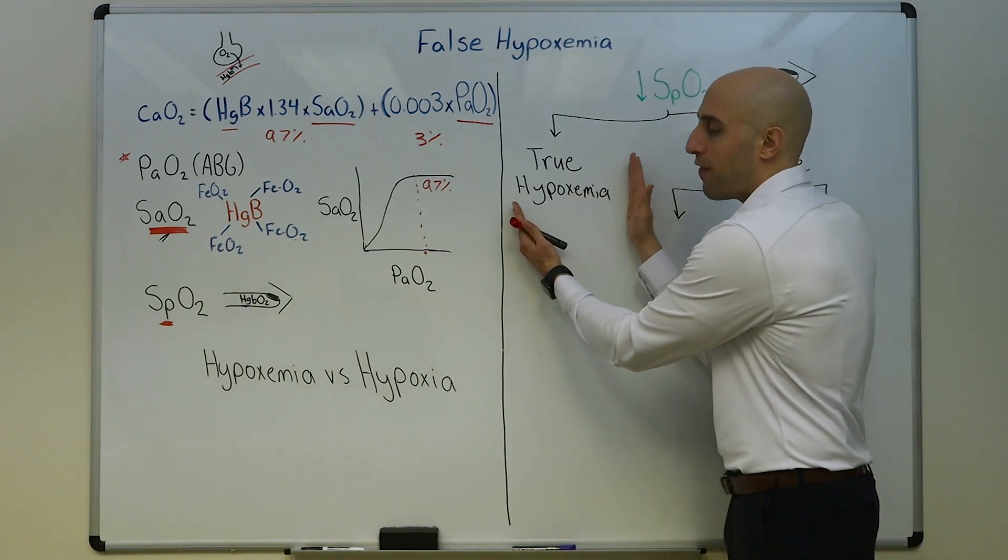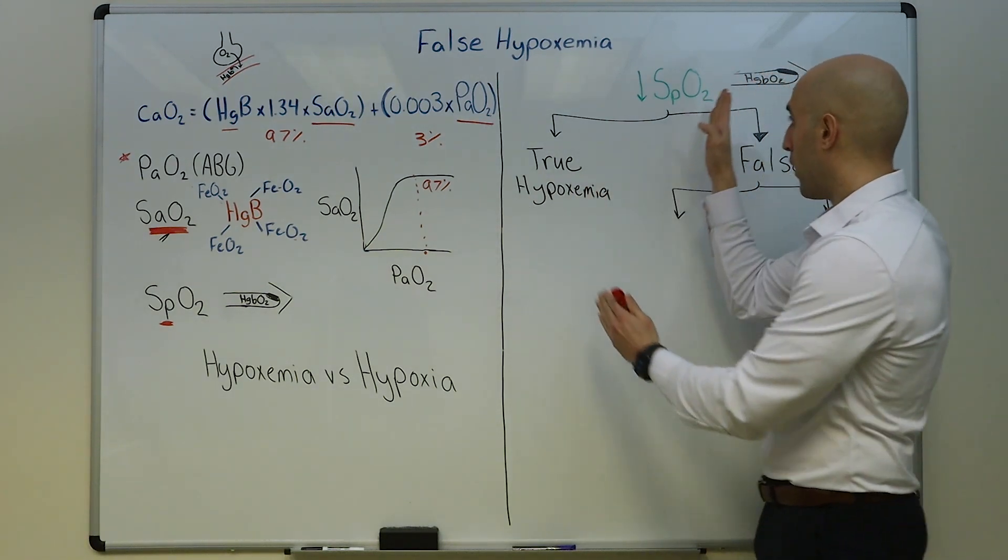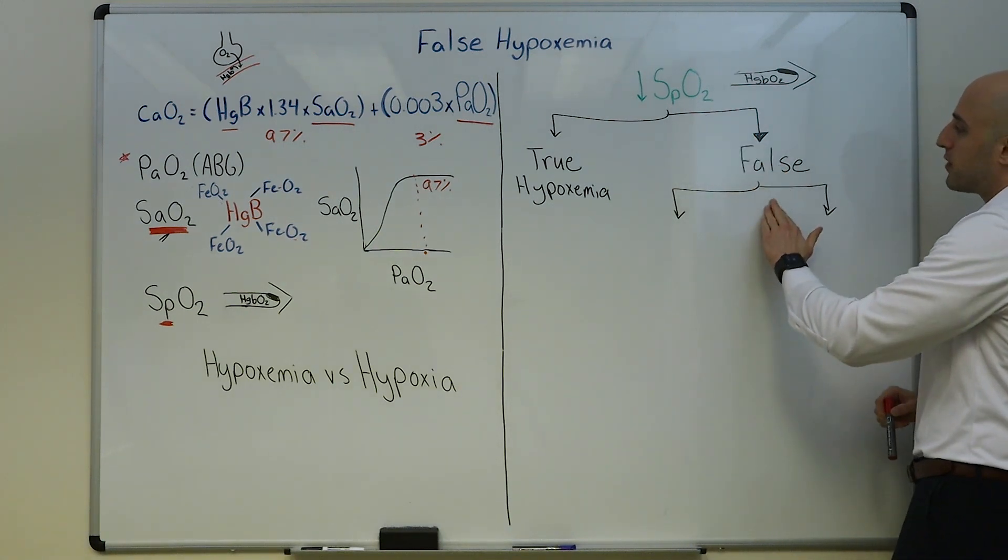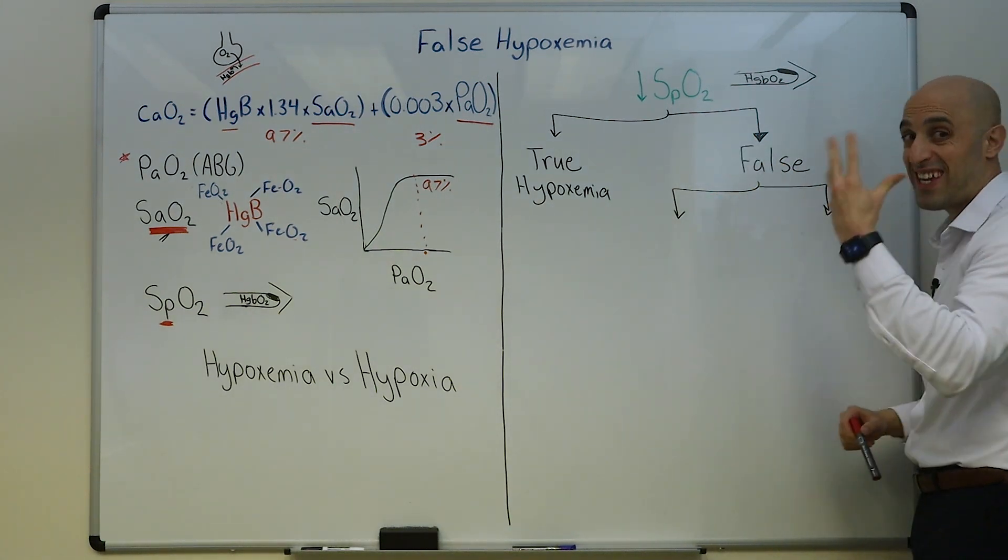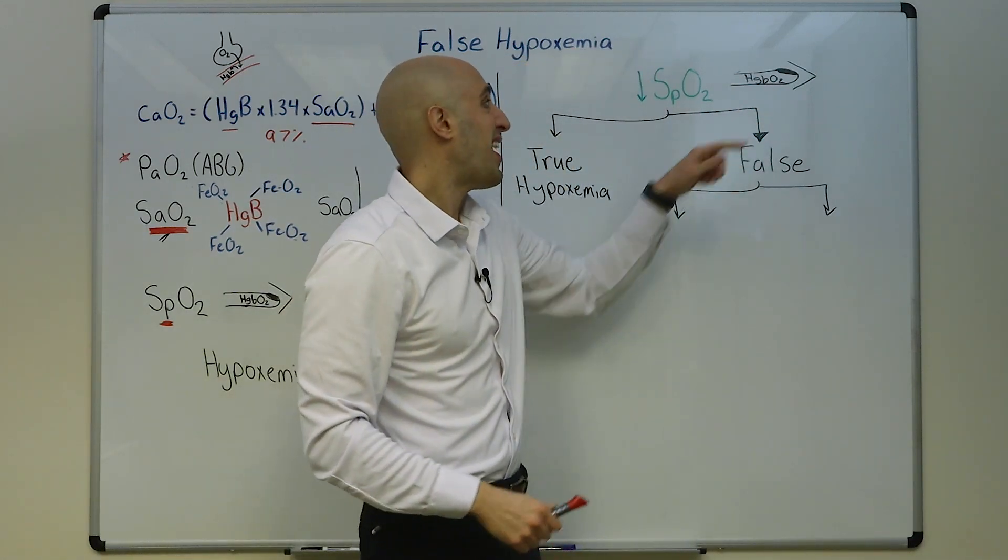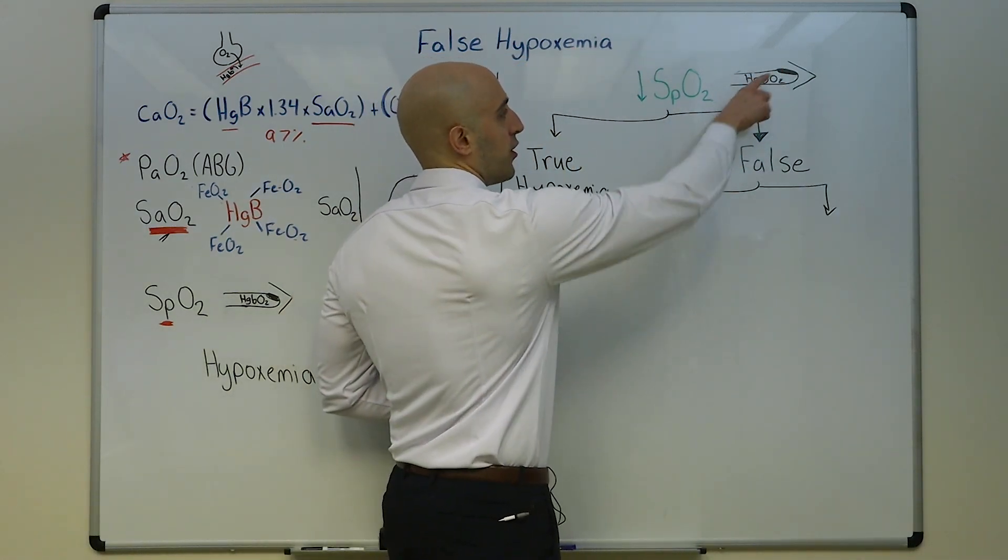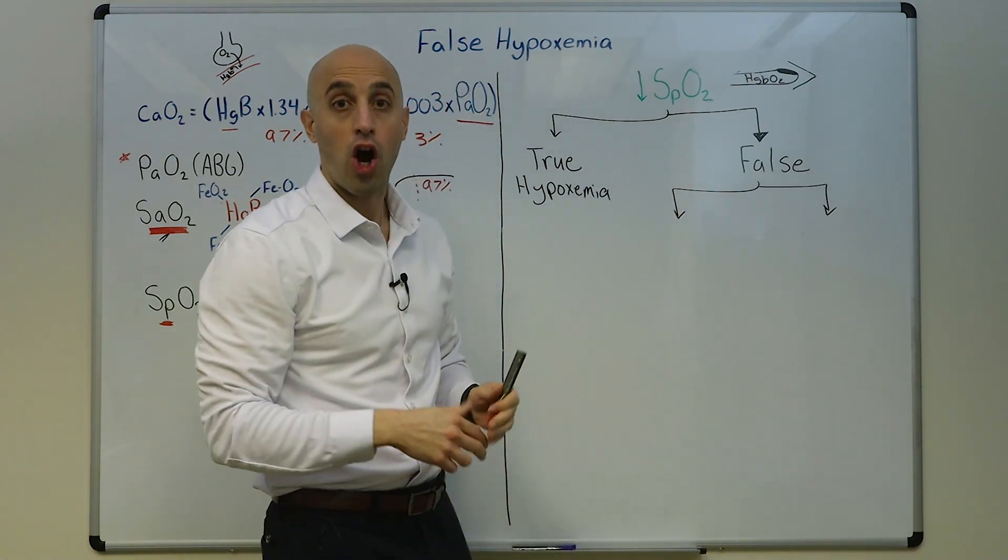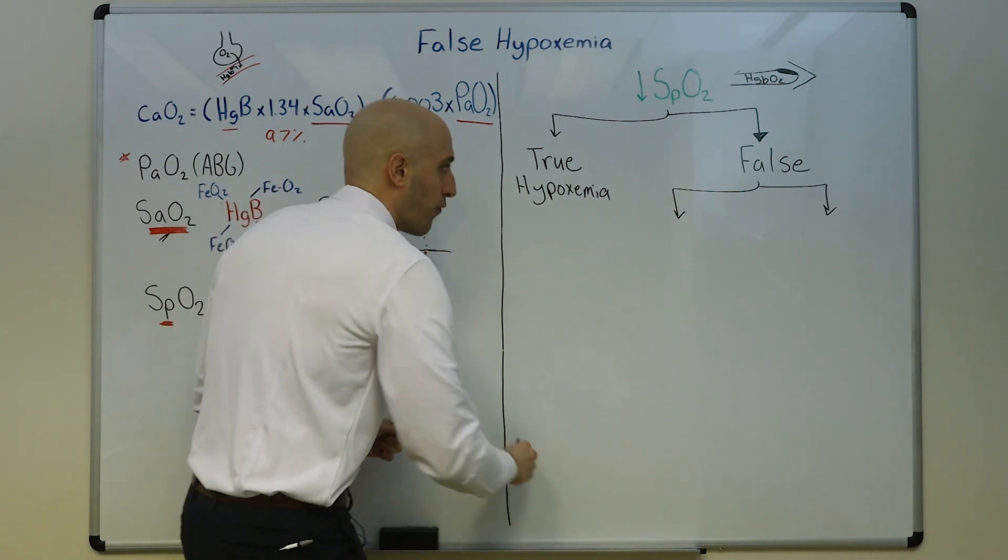So you take a pulse ox, you put it on a patient's finger, and you see that the oxygen saturation is low. This can actually reflect true hypoxemia, meaning that this will be low, the PaO2 will be low, the O2 sat even measured by co-oxymetry will be low, and we always work under this assumption until proven otherwise in a patient.